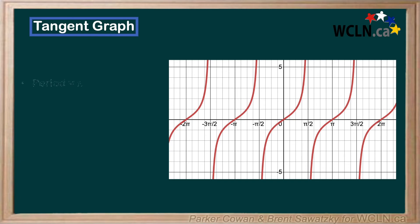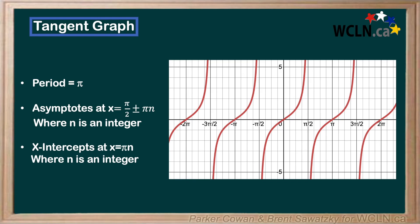The period of this graph is pi, as we noted on the unit circle. We notice the asymptotes repeat every period, so we can say that there are asymptotes at x equals pi over 2 plus or minus n times pi, where n is an integer. And there is also an x-intercept at every period, or at x equals pi times n, where n is an integer.